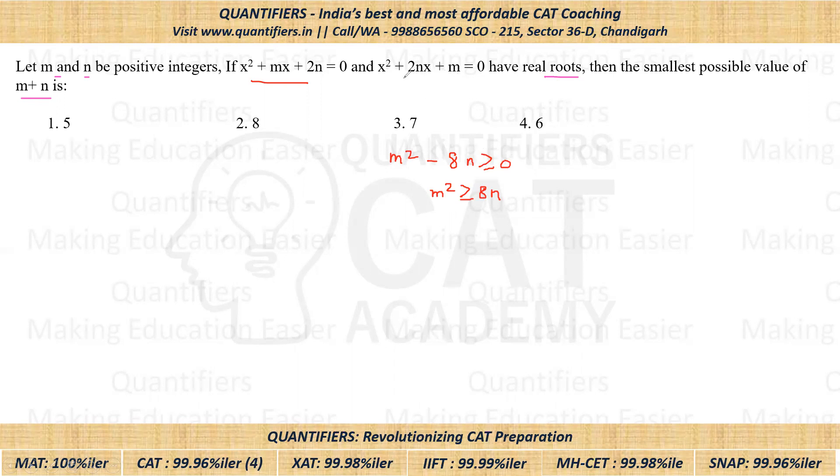Now here, if I apply B² - 4AC greater than or equal to zero, we'll have 4N² - 4 into 1 into M, so that is -4M greater than or equal to zero. On taking 4 common, we'll get N² - M greater than or equal to zero, or N² is greater than or equal to M.